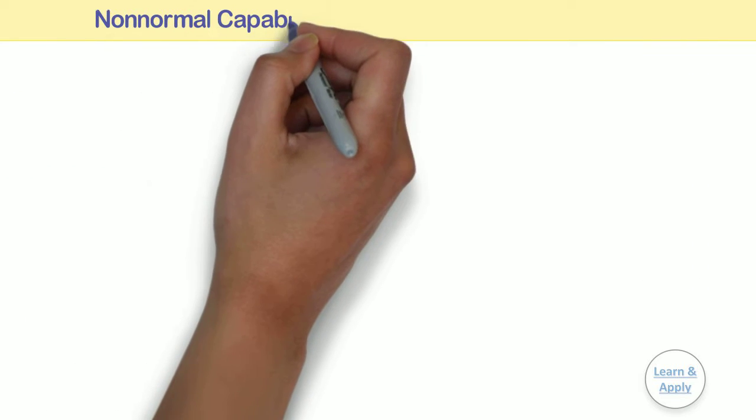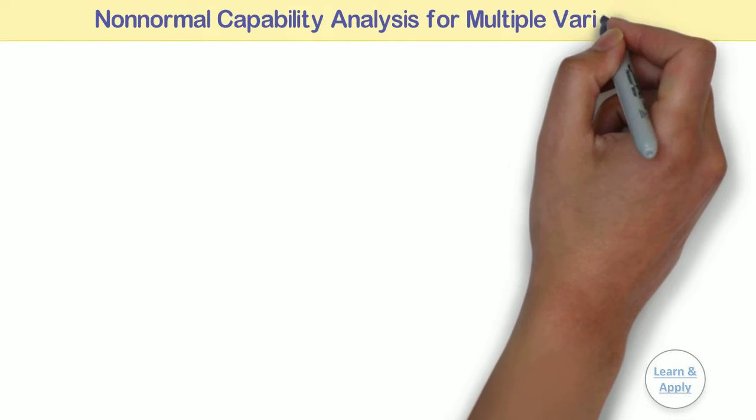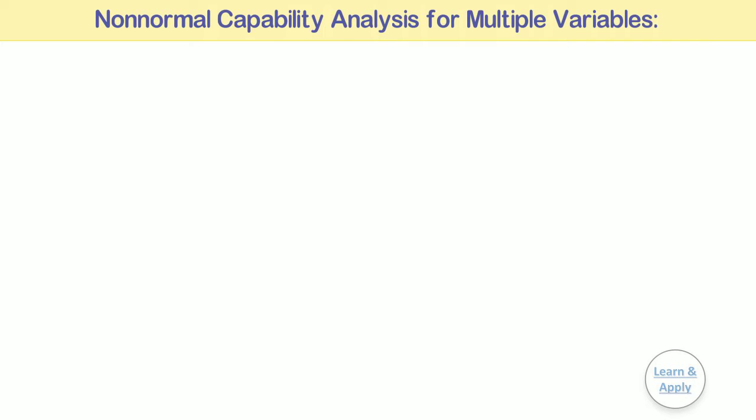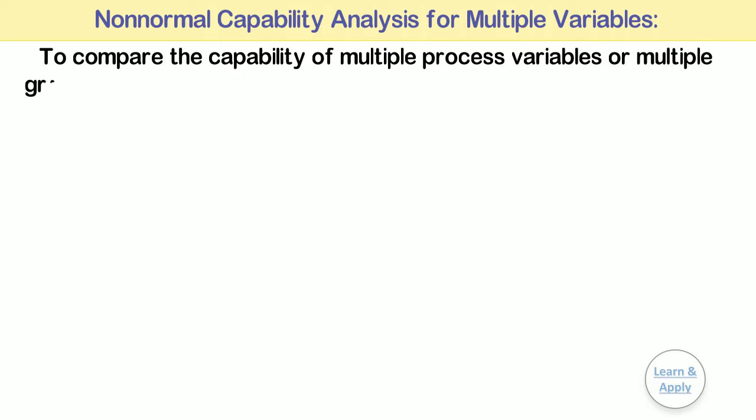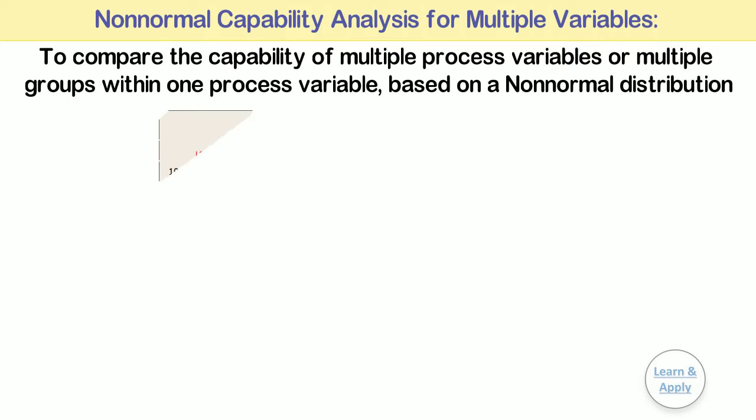Non-normal capability analysis for multiple variables. Use non-normal capability analysis for multiple variables to compare the capability of multiple process variables or multiple groups within one process variable based on a non-normal distribution.